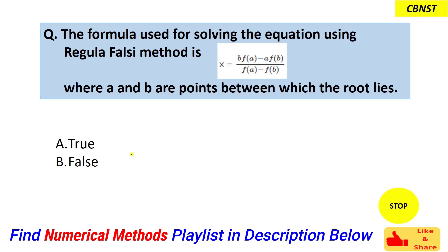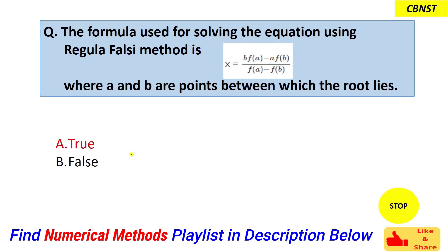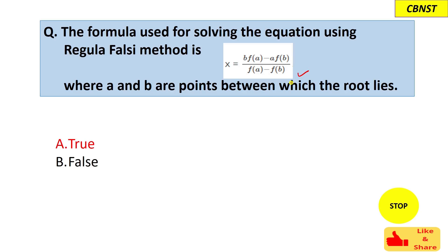I hope you have got the answer. The correct answer is option A—that means this formula is correct. This is the Regula Falsi method to find the roots of an algebraic or transcendental equation.